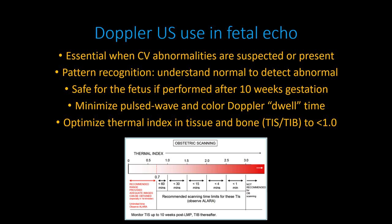Dwell time is the time you are actually scanning with these modalities on the fetus. Optimizing the thermal index in tissue and bone is best for fetal scanning. With TTE scanning, the thermal index is above 1.0, ranging all the way past 1.8. With fetal echo scanning, scans are typically done in less than an hour, and the optimal thermal index should be below 1.0, ideally right around 0.7.